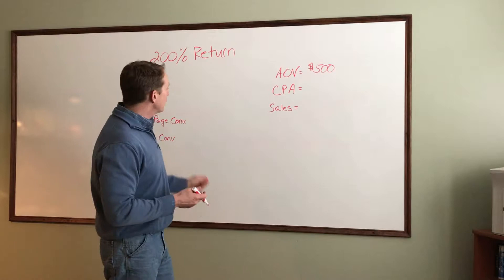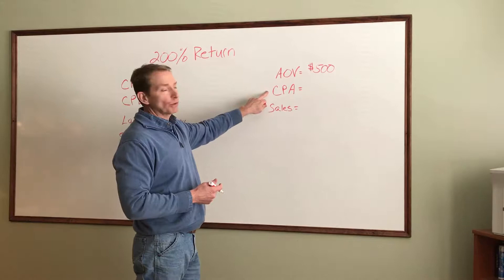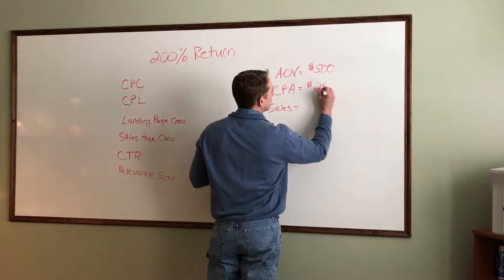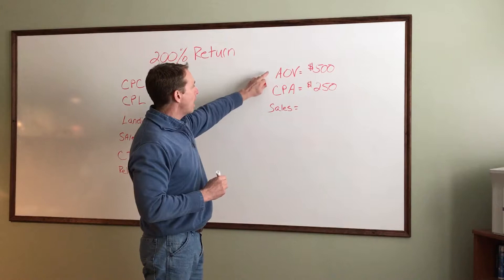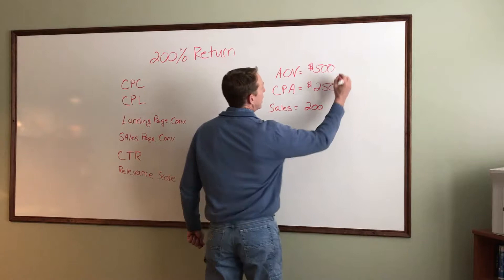If we want a 200% return, our cost per acquisition cannot exceed $250. For every dollar I put out, I want $2 back. So how many sales do we want to make this month? Let's say I want to make 200 sales so I can make $100,000.